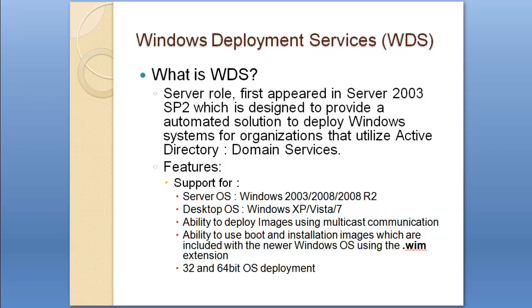So what is Windows Deployment Services? It is a server role which first appeared in Server 2003 Service Pack 2 — notice Service Pack 2, because when Server 2003 first came out, WDS did not come with it. It is a server role designed to provide an automated solution to deploy Windows systems for organizations that utilize Active Directory Domain Services. Features include support for installing server operating systems like Windows 2003, 2008, and 2008 R2, as well as desktop operating systems including Windows XP, Vista, and Windows 7, along with the ability to deploy images using multicast connections.